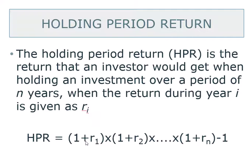And to do so, we just get the annualized return — 1 plus the annual return for that year — and we multiply those 1-plus-the-returns together. At the end, we subtract 1, and the answer we get is going to be the holding period return.